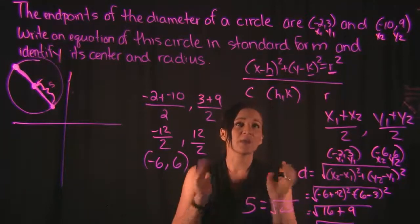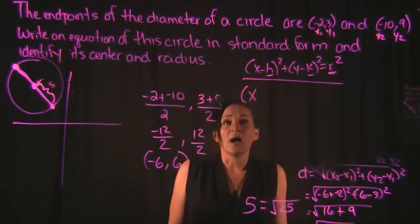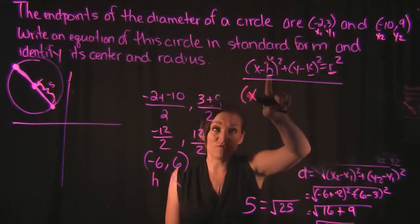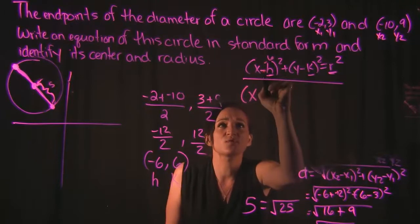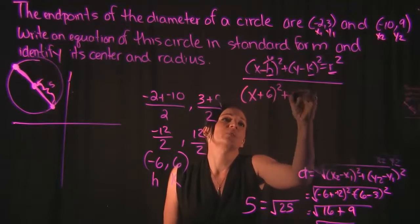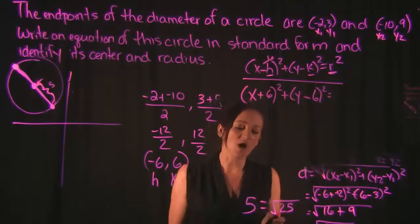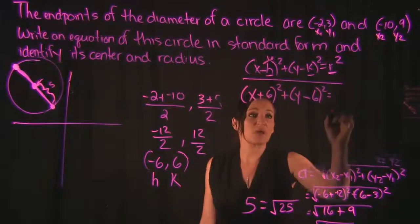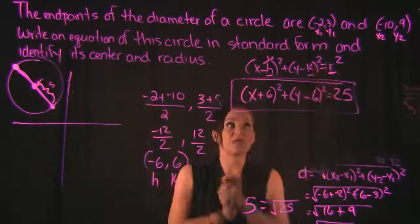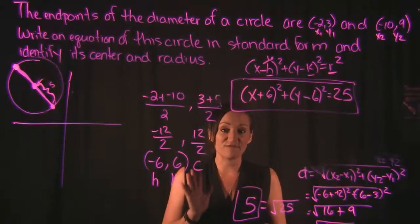Now we plug everything into the standard form equation. For h equals negative 6, the double negative rule turns x minus negative 6 into x plus 6, squared. Then plus y minus k, which is y minus 6, squared, equals r squared. Since r equals 5, r squared is 25. So the equation is (x + 6)² + (y − 6)² = 25. The center is negative 6, 6 and the radius is 5.